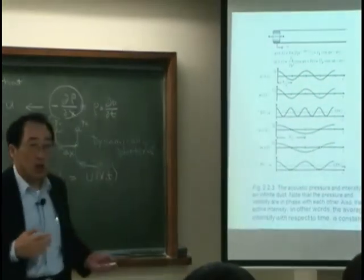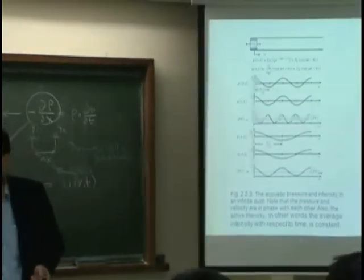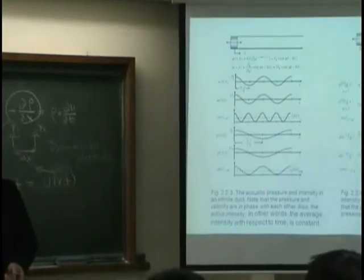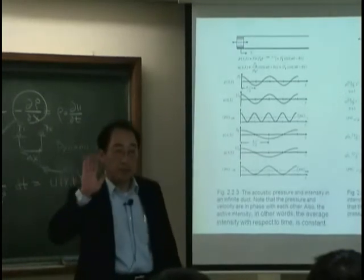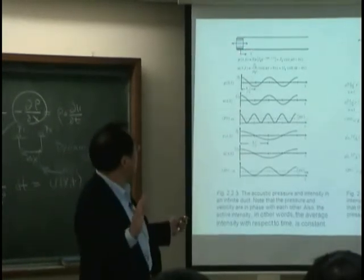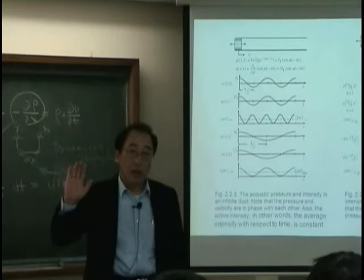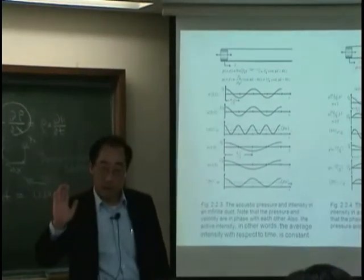The mean intensity along x axis is not zero. That's very sensible because suppose I have a piston over here, an infinite medium, and I push it back and forth.